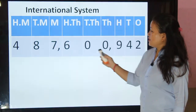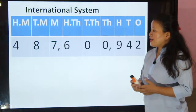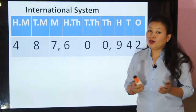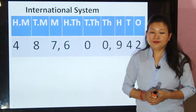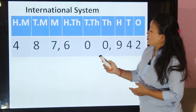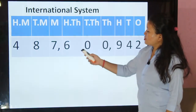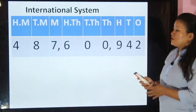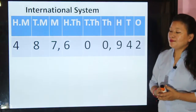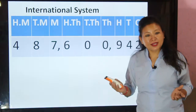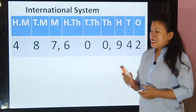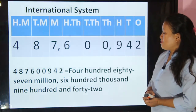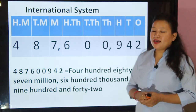You can see 487 is in the million period, that is 487 million. The next period gives six hundred thousand, and the ones period gives nine hundred and forty-two. So the overall number name according to the international system is: 487 million, 600 thousand, nine hundred and forty-two.